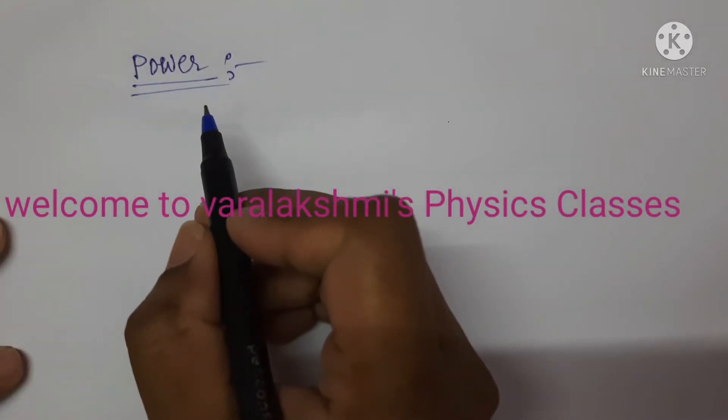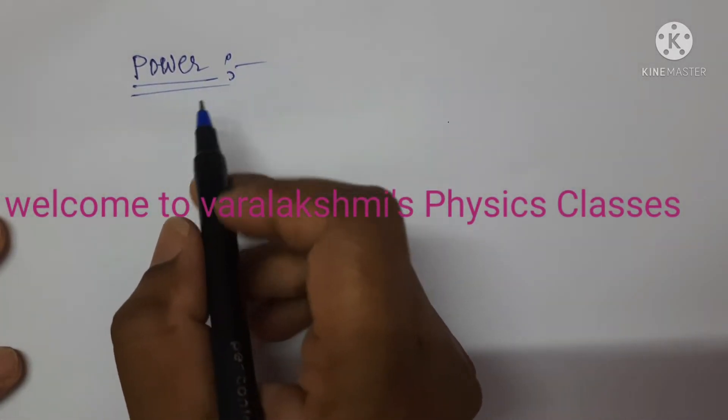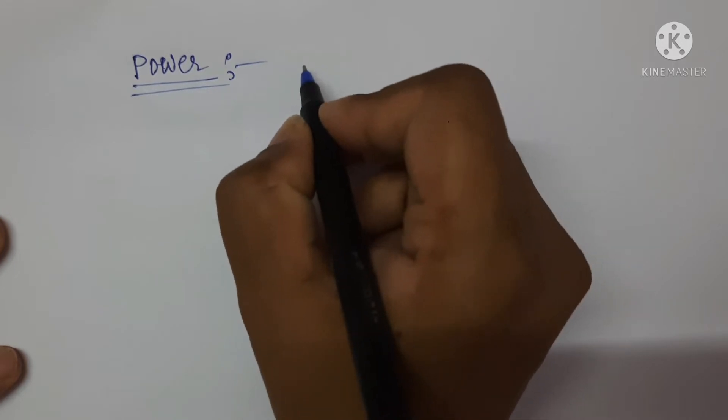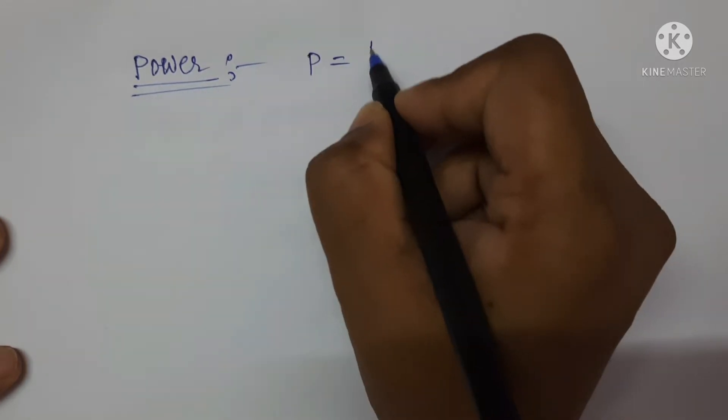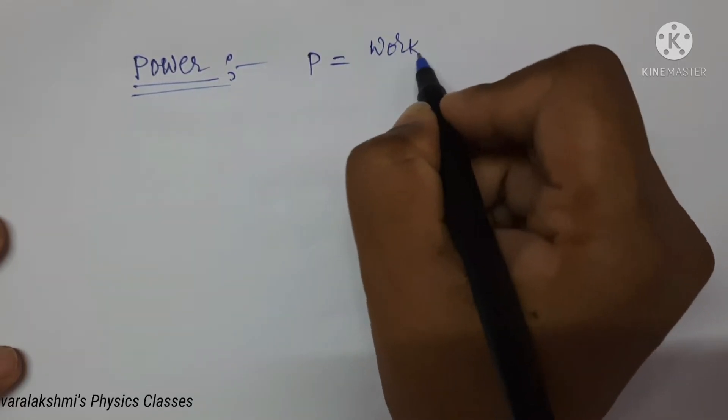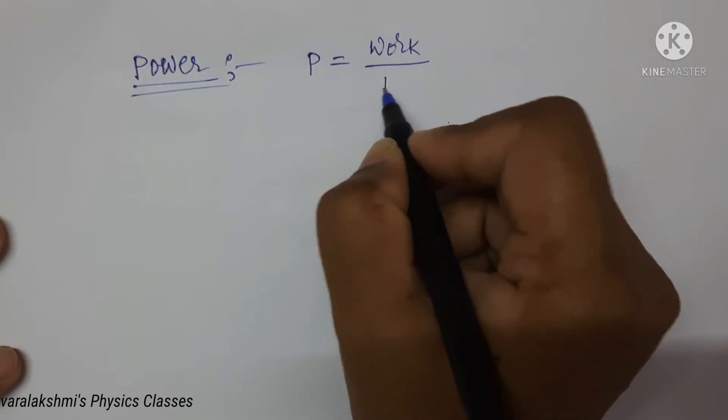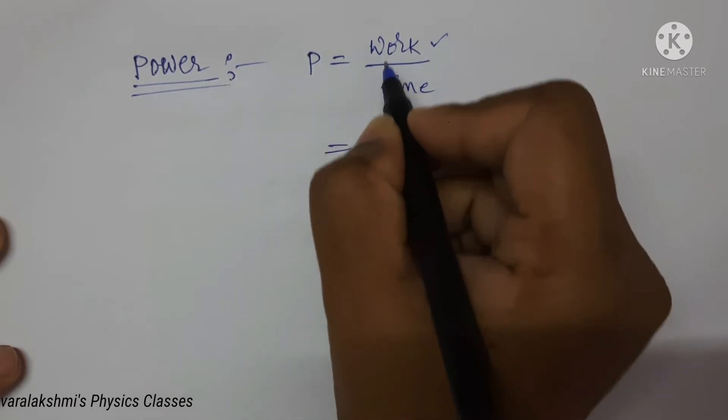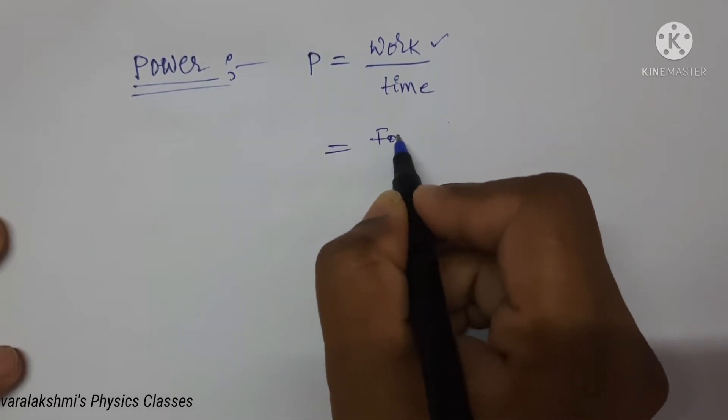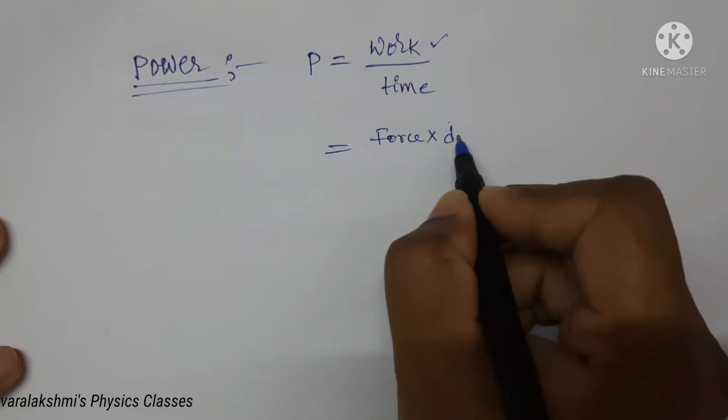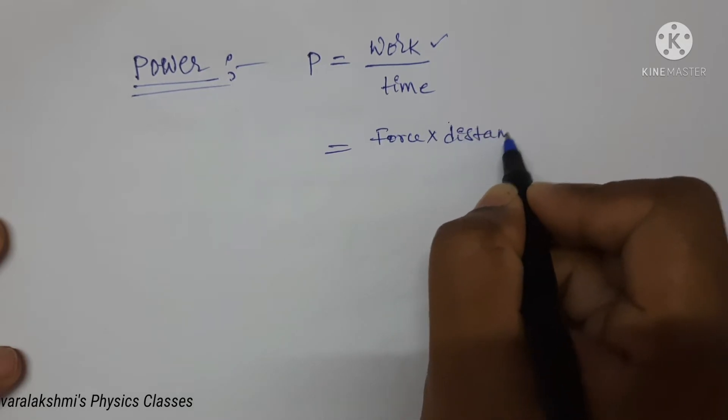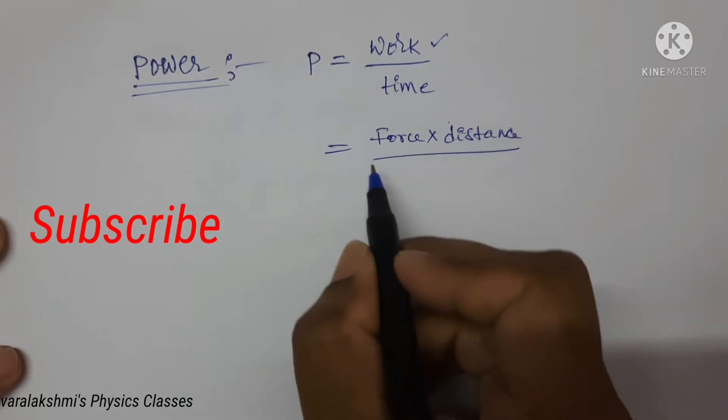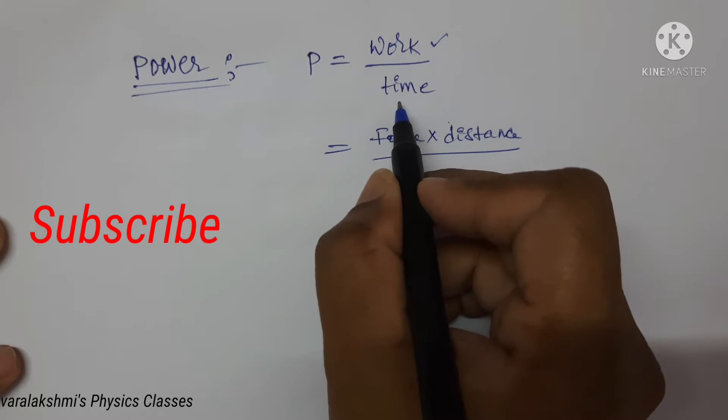Hi friends, in this video let us find the dimensions of power. Power is equal to work upon time. Again, write the formula for work: work is equal to force multiplied by distance upon time. Here, time is already there.